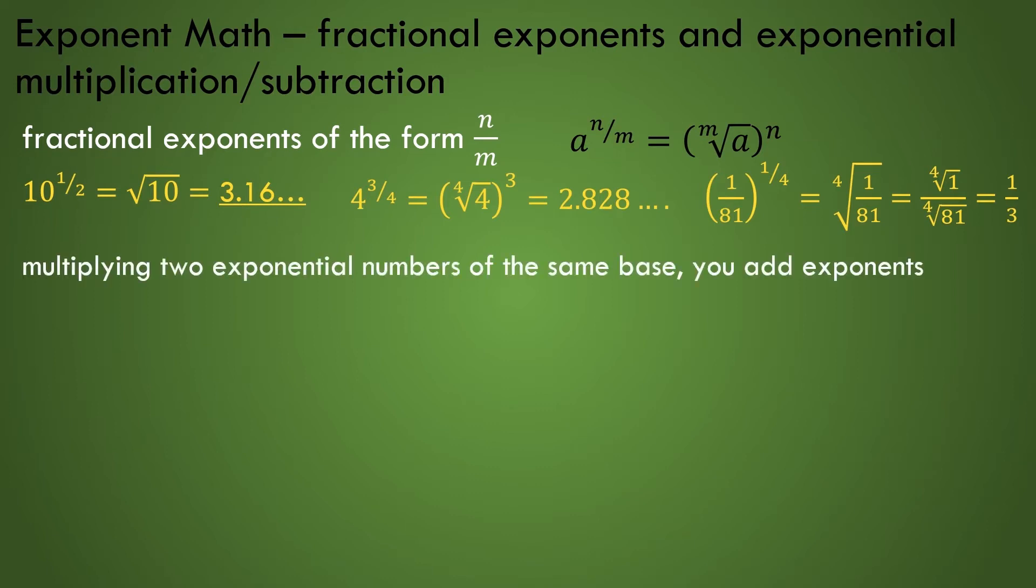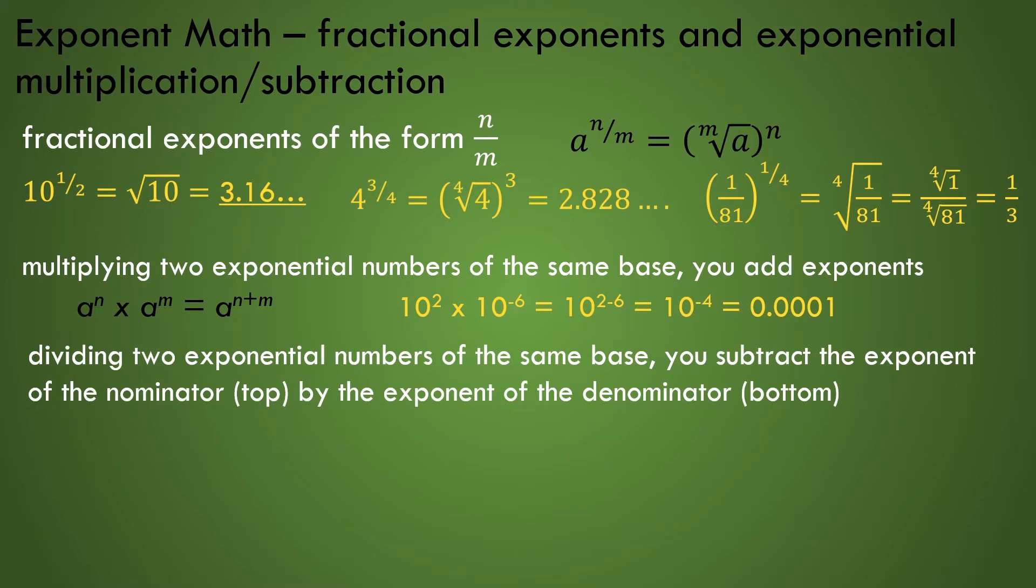When multiplying two exponential numbers of the same base, you add the exponents. An example would be 10 to the power of 2 times 10 to the power of minus 6, which gives us 10 to the power of minus 4, where the exponents 2 and minus 6 were added to get the exponent minus 4. When dividing two exponential numbers of the same base, you subtract the exponent of the numerator top by the exponent of the denominator bottom. So if we have 10 to the power of 12 divided by 10 to the power of 7, we can rewrite it as 10 to the power of 5, where we subtract 7 from 12 to get the 5 exponent.